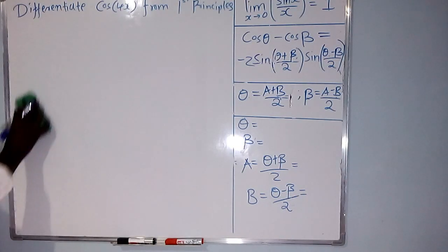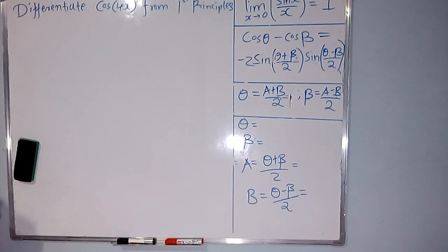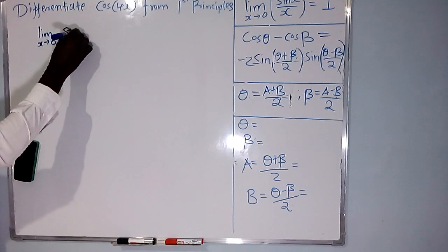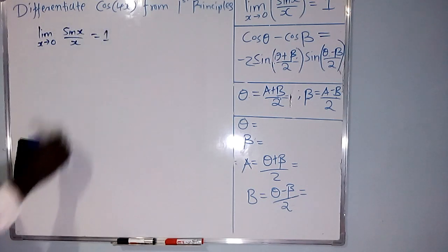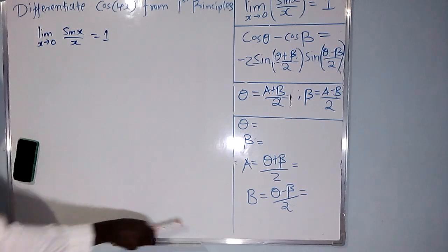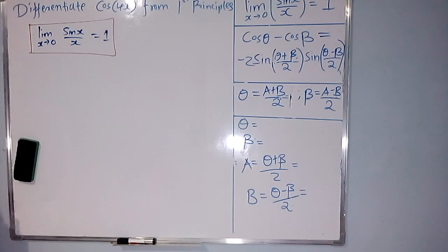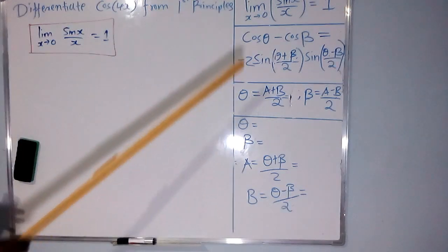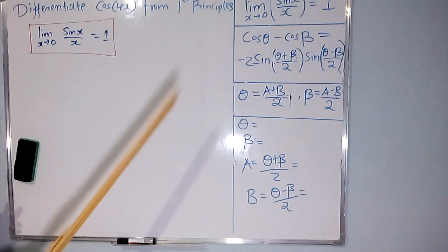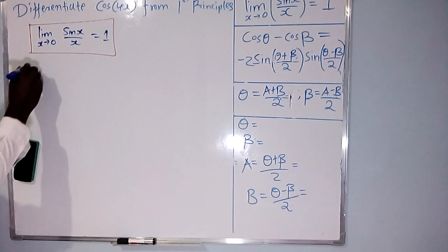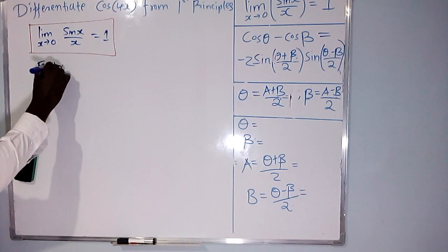To differentiate cos(4x) from first principles, we use the fact that the limit as x tends to 0 of sin(x)/x is always 1. When you use L'Hôpital's rule to sort out that indeterminate form, you find the limit as x tends to 0 of sin(x)/x is just 1. That is the first thing you need to know.